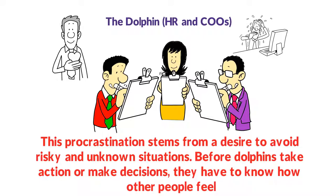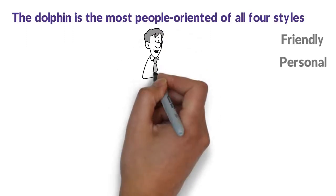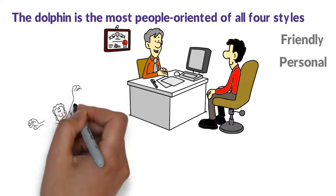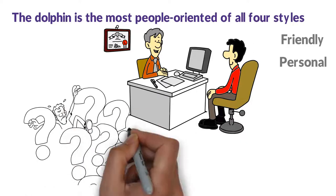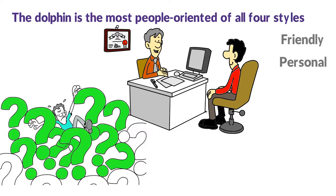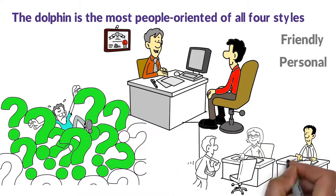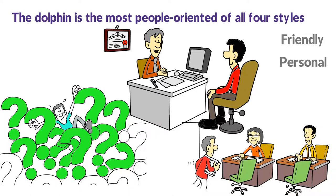The dolphin is the most people-oriented of all four styles. Having close, friendly, personal, and first-name relationships with others is one of the most important objectives of the dolphin's style. Dolphins dislike interpersonal conflicts so much that they sometimes say what they think other people want to hear, rather than what they really think. Dolphins have tremendous counseling skills and are extremely supportive of other people. They are also incredibly active listeners. You usually feel good just being with a dolphin.